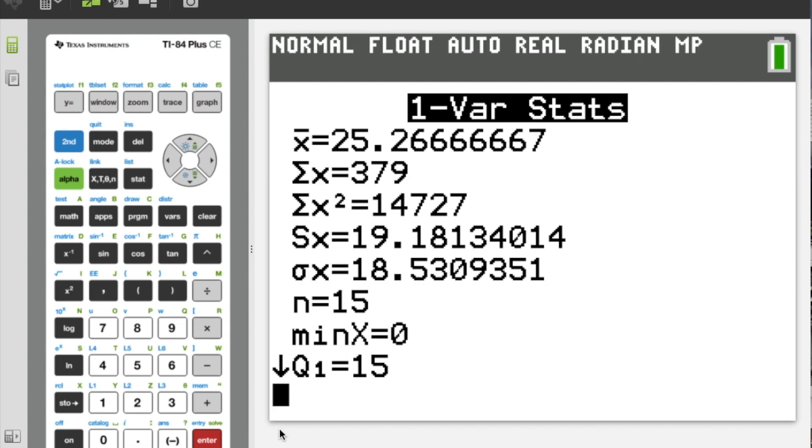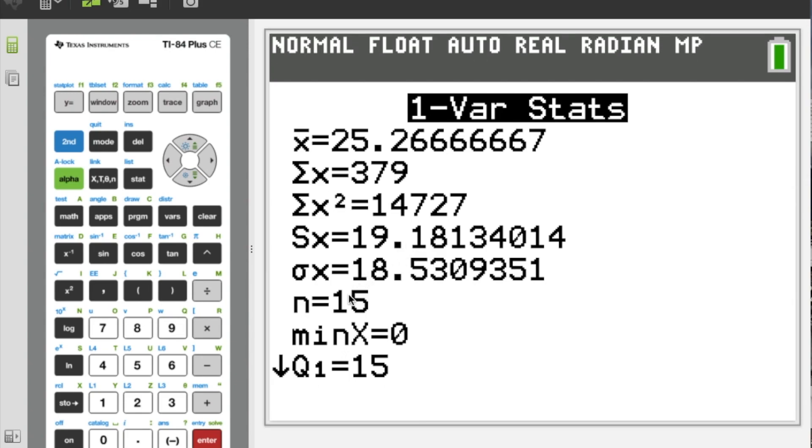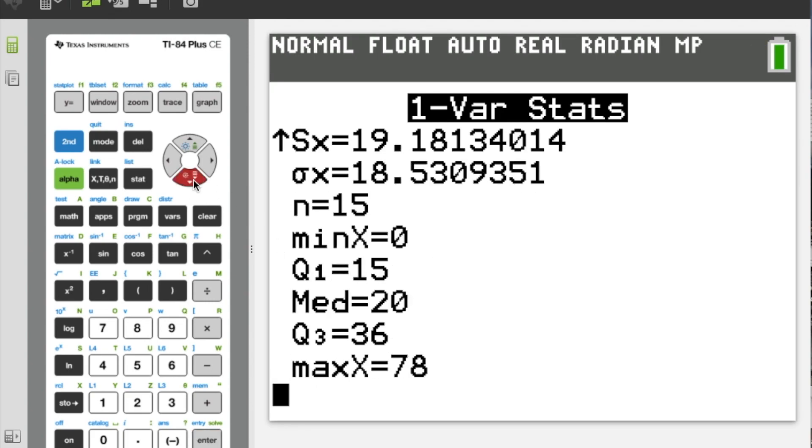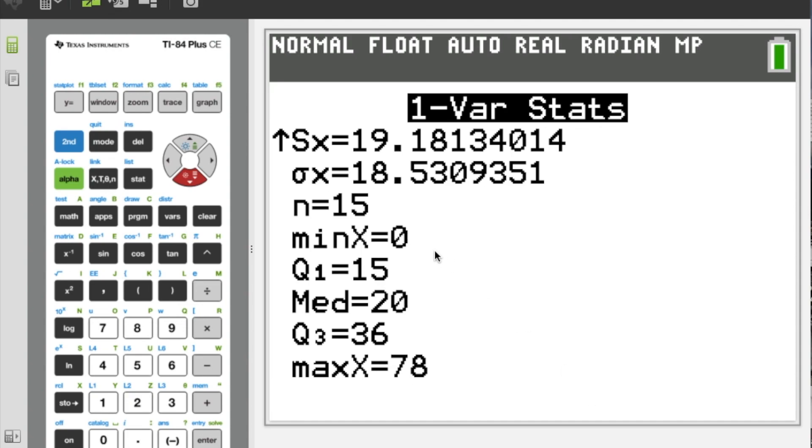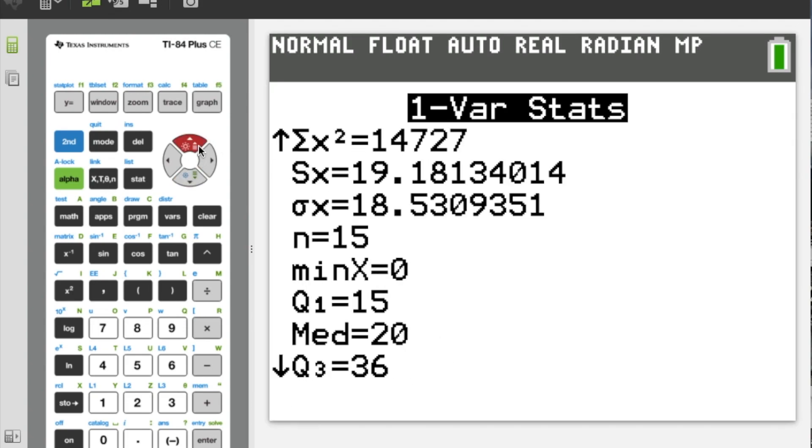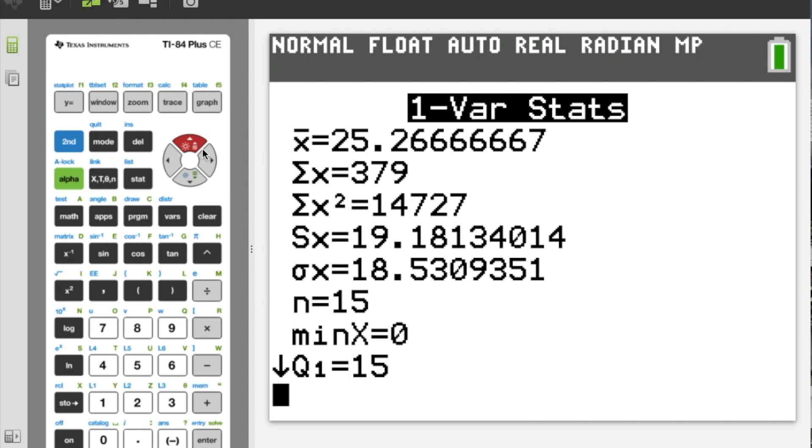So if I walk through this, I know that my mean is 25.3. I see that my standard deviation, we're going to assume that this is actually the population here, so my standard deviation is like 18.5. And then I get my five number summary down here. So my minimum is 0, Q1 is 15, median 20, Q3 is 36, and max 78. So it becomes really easy to pull up everything that you need for something like this right on your GDC.